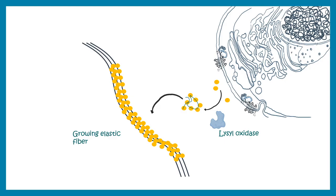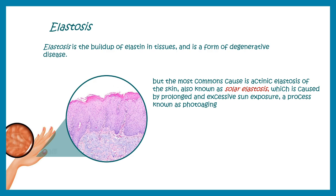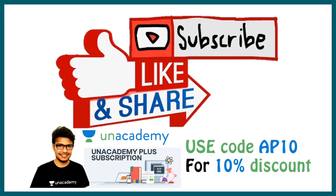This is how we see elastin in our tissues and connective tissues. There are also some conditions called elastasis — meaning the buildup of elastin in our tissue. Excessive buildup of elastin is also bad; not having elastin is bad, but too much elastin is also harmful. Sometimes it happens after prolonged solar exposure, and it is called solar elastasis.